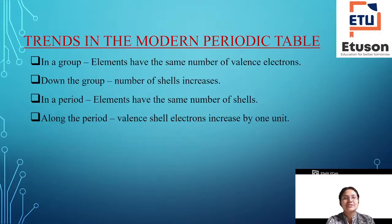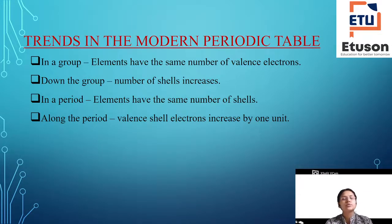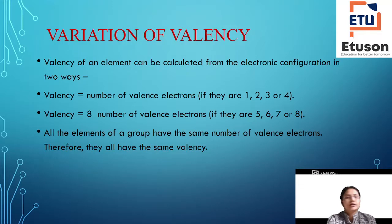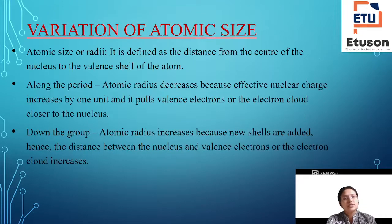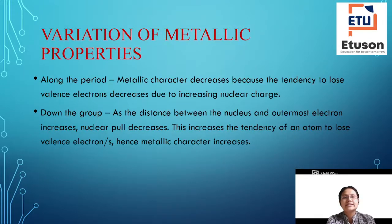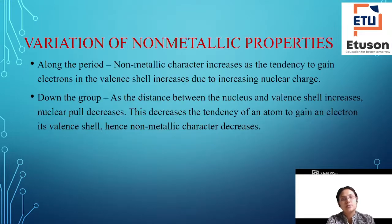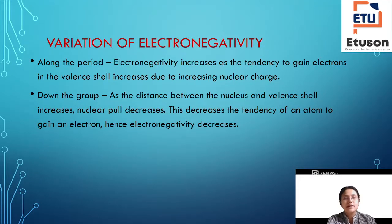Let's summarize what we saw. Atomic radius: down the group the number of shells increases so radius increases; along the period radius decreases. Valency remains the same in a group. Atomic size increases down a group and decreases along a period. Metallic character decreases along a period and increases down a group. Non-metallic character increases along a period and decreases down a group. Electronegativity increases along a period and decreases down a group.